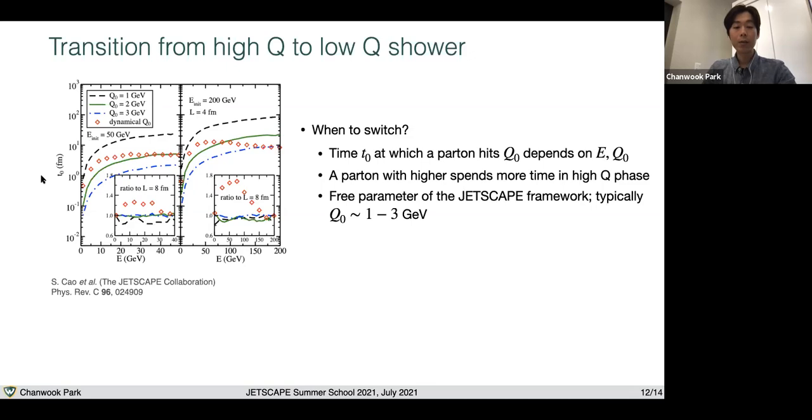What value should we choose for the switching virtuality? It has to be small number definitely, but it's not easy to answer because the higher virtuality shower and lower virtuality shower are not clearly separated from each other. One way to deal with this uncertainty is to make it a free parameter and one to three GeV is a typical range that we can choose from our calculations.